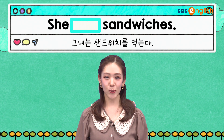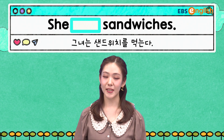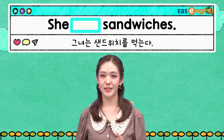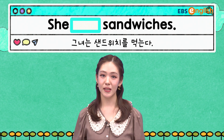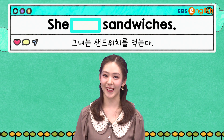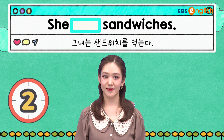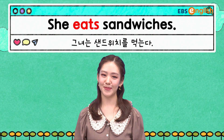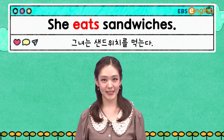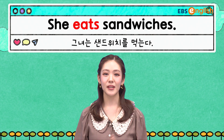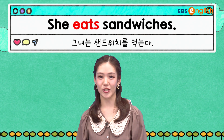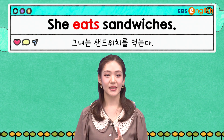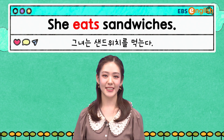그녀는 샌드위치를 먹는다. 그녀, 이제 3인칭 단수죠. 그러면 she blank sandwiches. 이 blank 안에는 어떤 단어가 들어갈까요? 네, 맞습니다. 역시 3인칭 단수에는 뒤에 S가 붙으면서 eats죠. She eats sandwiches.